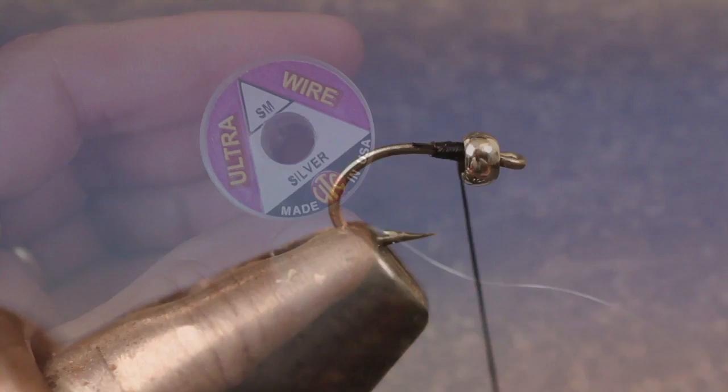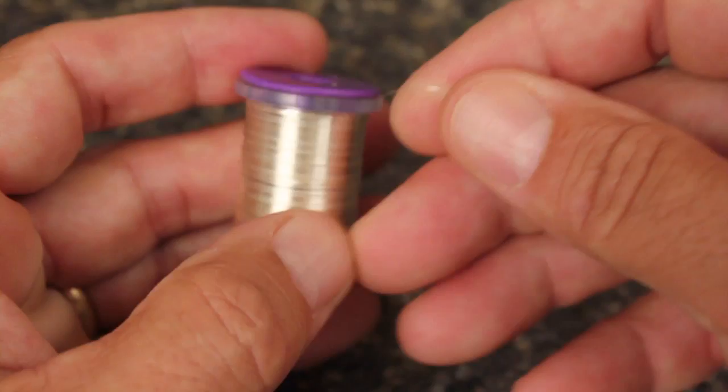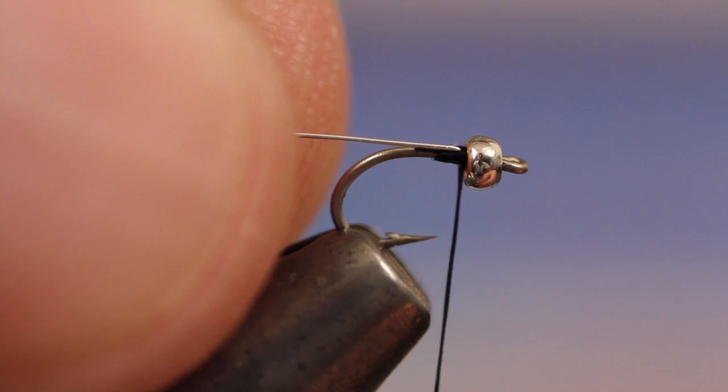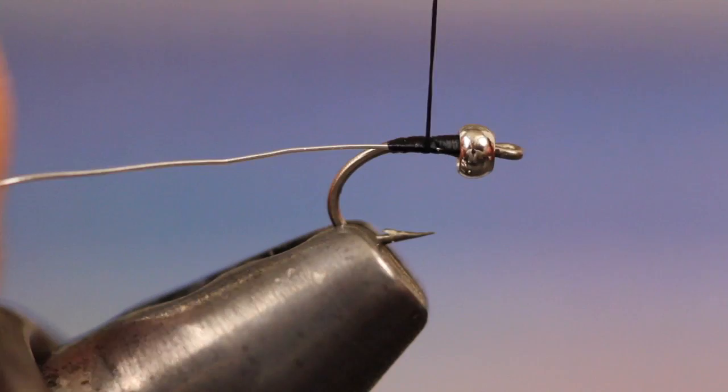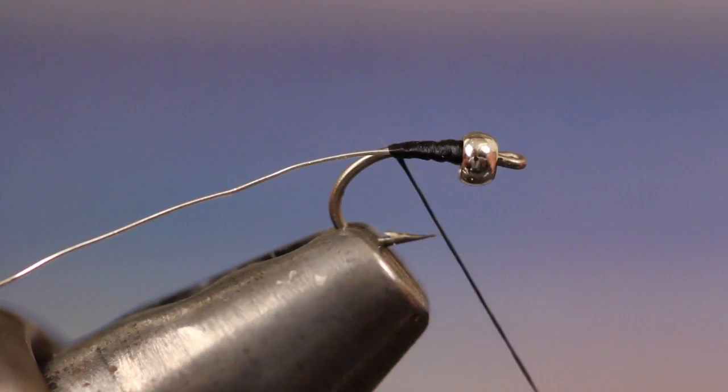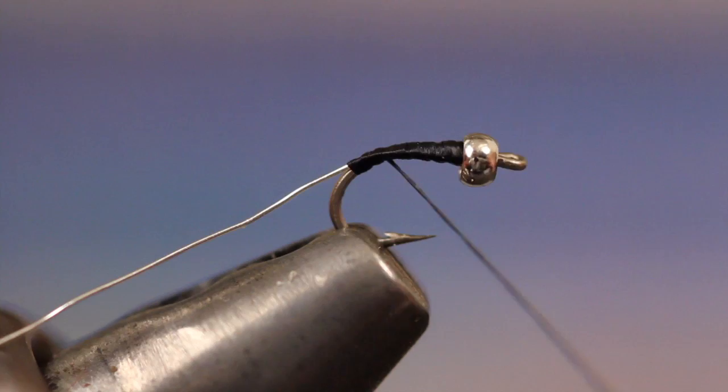For the rib of the fly, I'm using silver ultra wire in size small. Break or snip off about 5 or 6 inches. Insert one end of the wire just behind the bead head and start taking wraps with your tying thread rearward. Only go about a third of the fly's body length before reversing direction and wrapping back toward the bead. Now wrap back and go another one third before changing direction and once again taking wraps back toward the bead.